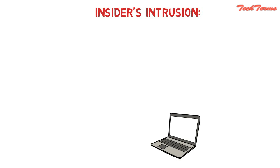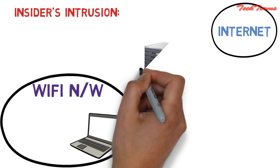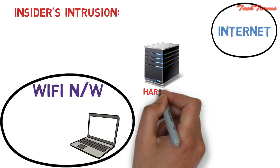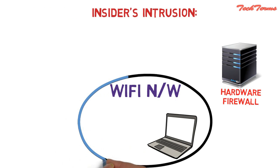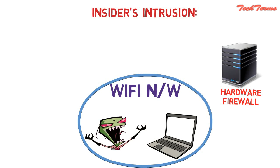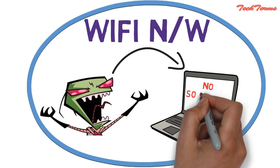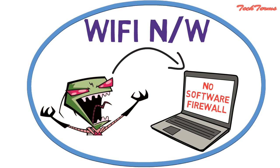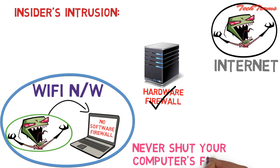Suppose you have connected your laptop to a public Wi-Fi network. The Wi-Fi network is connected to the internet via a hardware firewall. Due to the presence of this hardware firewall, hackers from the internet cannot attack the computers in this Wi-Fi network. But what if the hacker is present inside this Wi-Fi network? A hacker can easily bypass the high security of this hardware firewall and attack your computer if your computer is not protected by a software firewall. So to protect your computer from insider's intrusion to some extent, you should never turn your computer's software firewall off.